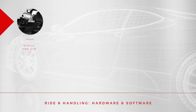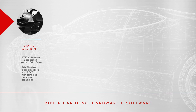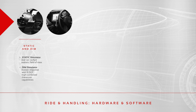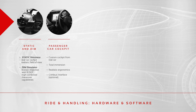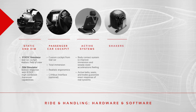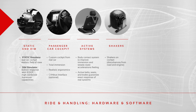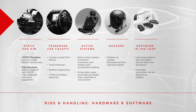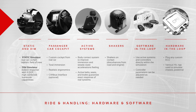A typical driving simulator configuration for ride and handling studies consists of a static or full-motion dynamics simulator. Most VI Grade customers have both to test and tune different types of systems. A cockpit from a real car helps increase the realism and immersion of the driving experience. Active systems like belts, seat, brake, and shakers give the driver additional cues. Control systems can also be added, both as software-in-the-loop or hardware-in-the-loop.